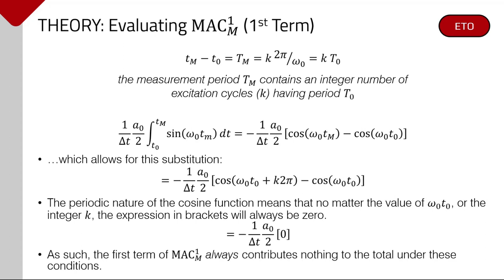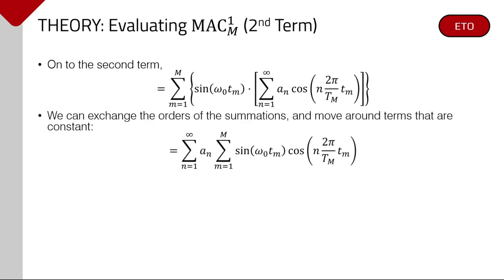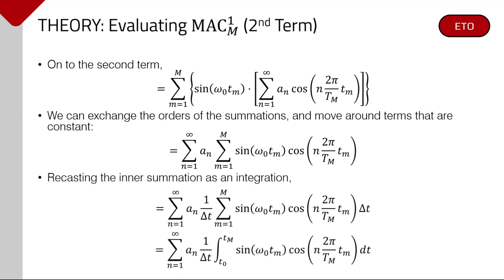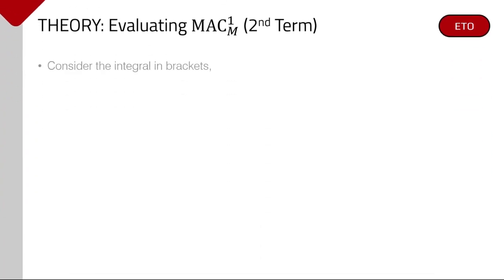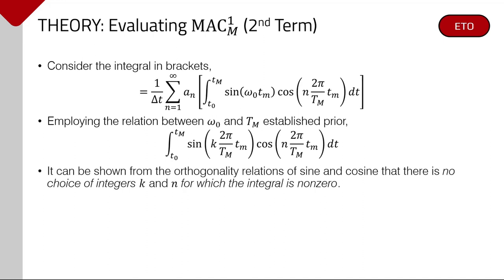The second condition is that the sampling interval t sub m is an integer multiple of the period corresponding to the excitation frequency. If we evaluate the integral then, the second condition allows for the following substitution. It should be clear that, owing to the periodicity of the cosine function, the quantity in the square brackets is and will always be 0. As a result, we find knowing the value of a sub 0 is irrelevant, since under these conditions, its term will never contribute anything to the total result of the MAC operator. Considering next the second term. The first step is to exchange the order of the summations. Next, the inner time summation is replaced with the associated integral.